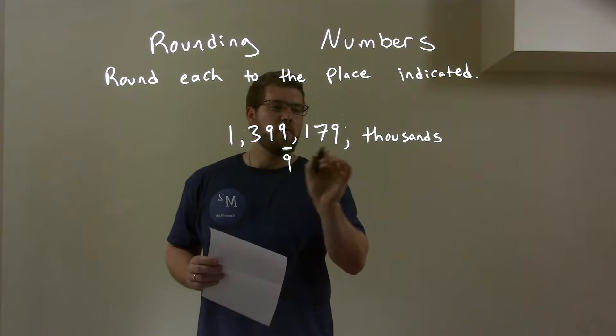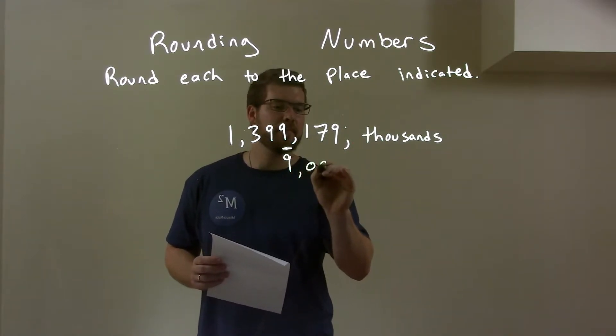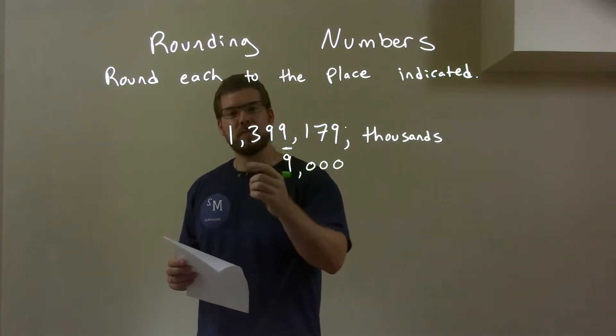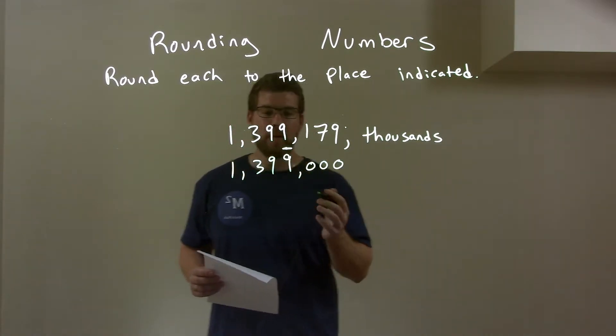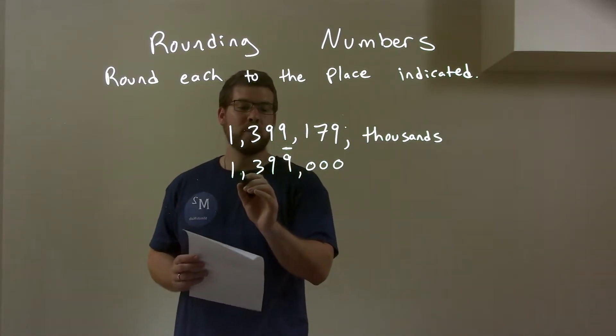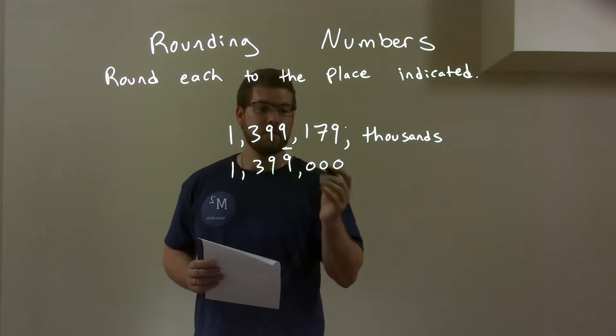So 9 stays the same, the rest become zeros to the right. And on the left hand side I keep everything else the same. And so now we have our final rounded answer of 1,399,000 and that's it.